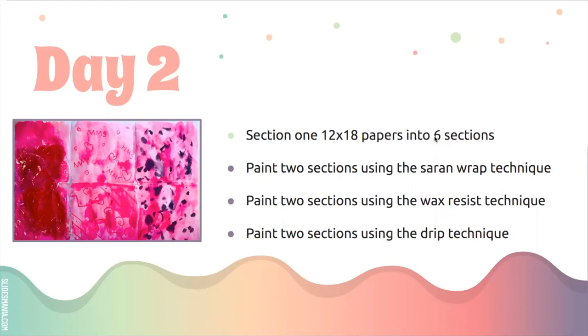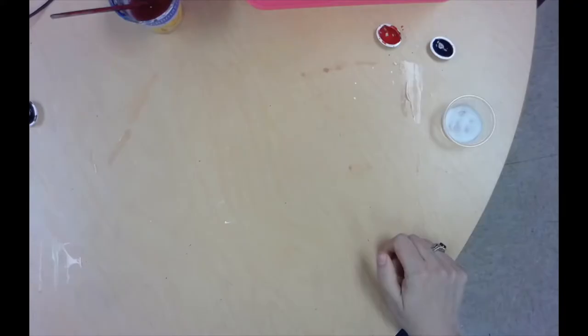Writing your name on the back with pencil, you're then going to paint two sections using the saran wrap technique, two sections using the wax resist technique, and two sections using the drip technique. Here's my finished product. And when you are done for the day, you will put it on the drying rack until class tomorrow. So let's take a look at what we are going to do today.